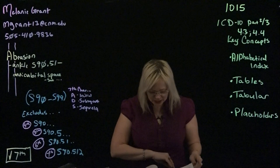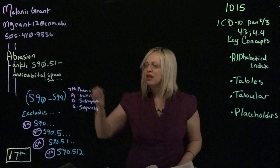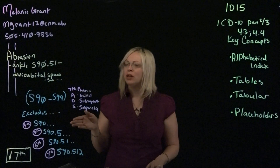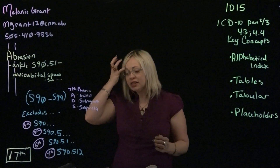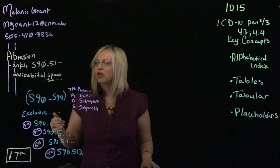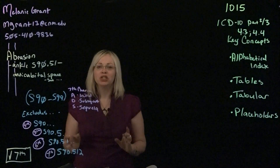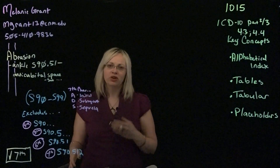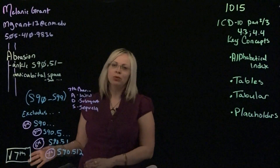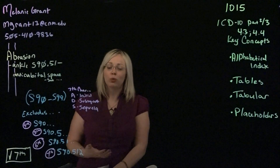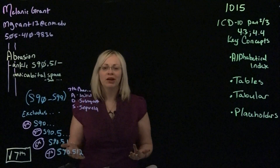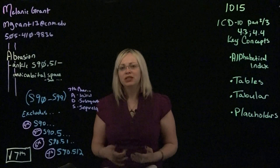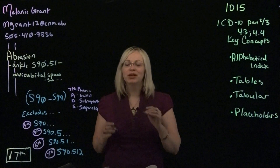I've given you an example here which also pulls some terms from page 74 of your textbook, looking at how to read the alphabetical index if we were looking at an ankle abrasion. The first thing you'd do is look up the main term — abrasion — because it's the problem. You wouldn't look under ankle; if you did, it would tell you to see condition. The alphabetical gives you guidance when you're in the wrong area. As new coders, you'll be flipping back and forth between different terms, synonyms, and eponyms.